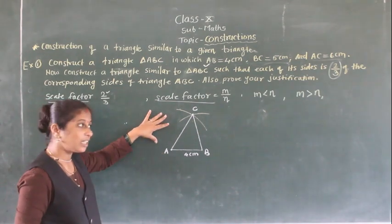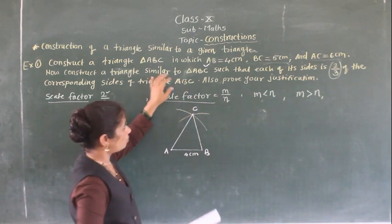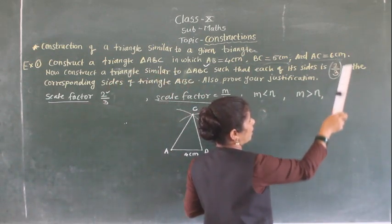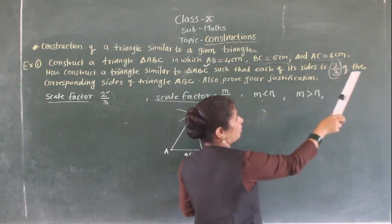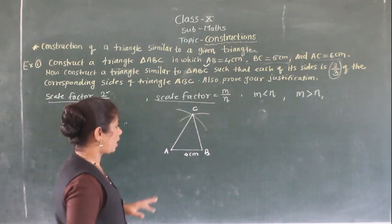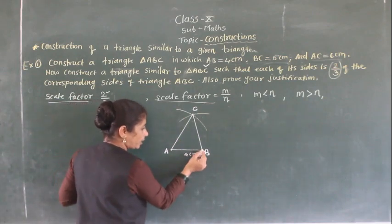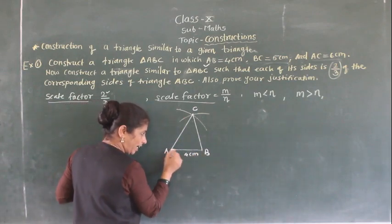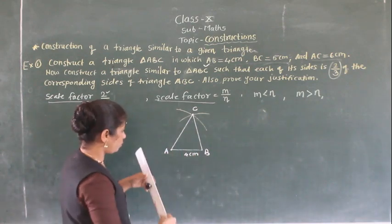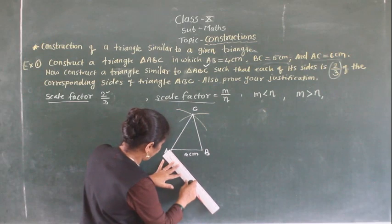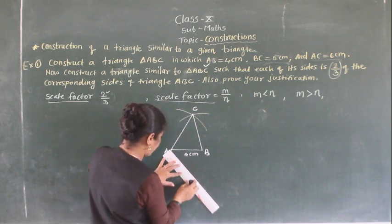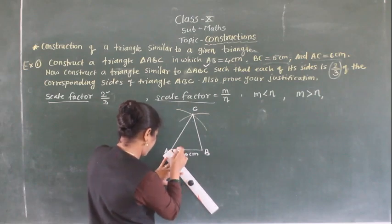Now we have to construct the similar triangle with scale factor 2/3 of the corresponding sides of triangle ABC. Make an acute angle at point A — draw a ray AX which makes an acute angle BAX.